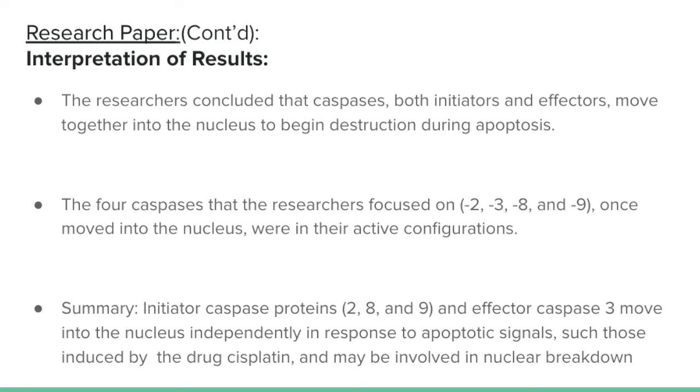The researchers concluded that caspases, both initiators and effectors, moved together into the nucleus to begin destruction during apoptosis. The four caspases they focused on—2, 3, 8, and 9—once moved into the nucleus were in their active configurations but moved independently. The initiator caspase proteins and effector caspase 3 move into the nucleus independently in response to apoptotic signals, such as those induced by drugs like cisplatin, a popular cancer therapy drug. They're involved in apoptosis, where nuclear breakdown is important. But the exact mechanism of action and what these proteins' exact targets are remain unknown and are areas of further research.